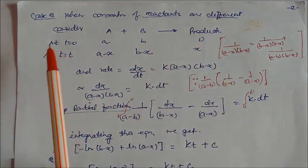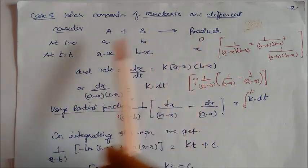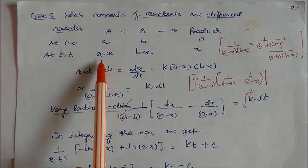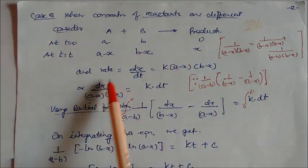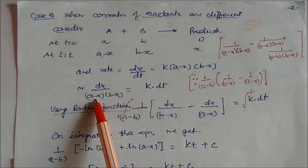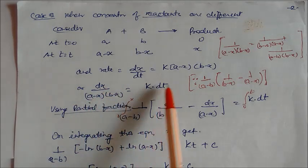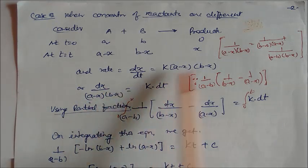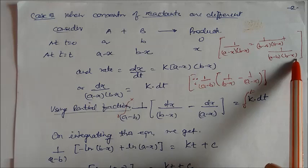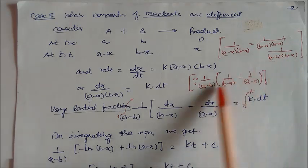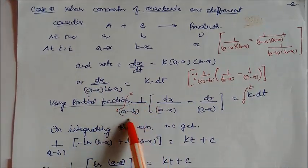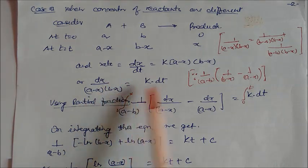Case number two is when the concentration of reactants are different. Consider A plus B giving product. At initial time, concentrations are A and B (different). Initially product is 0. At time t, concentrations become A−x and B−x, and product is x. Using the differential rate law, rate equals dx/dt equals K(A−x)(B−x). Separating variables using partial fractions gives 1/(A−B) into [1/(A−x) minus 1/(B−x)].